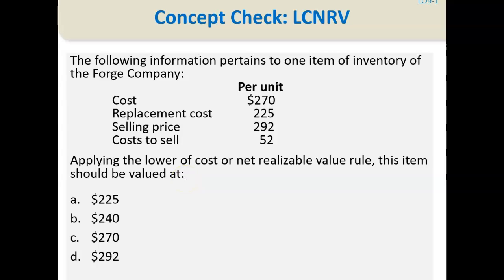Here is a concept check problem for you. Please pause your video to consider the following problem, and when you have completed your calculation, please start the video again to check your answer. The following information pertains to one item of inventory of Forge Company: the cost per unit is $270, replacement cost is $225, selling price is $292, and costs to sell are $52. Applying the lower of cost or net realizable value rule, this item should be valued at...